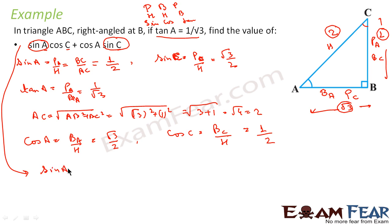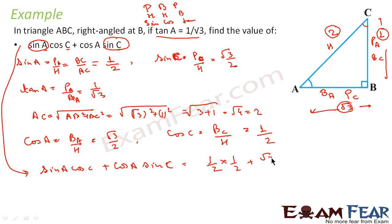The expression sin A cos C plus cos A sin C becomes: (1/2)(1/2) plus (root 3/2)(root 3/2), which equals 1/4 plus 3/4, that is 4/4, which equals 1.